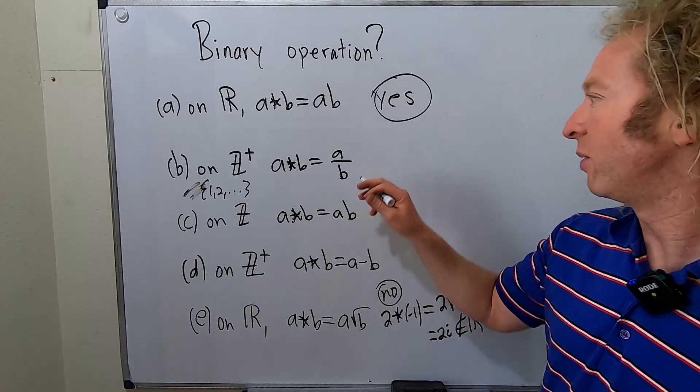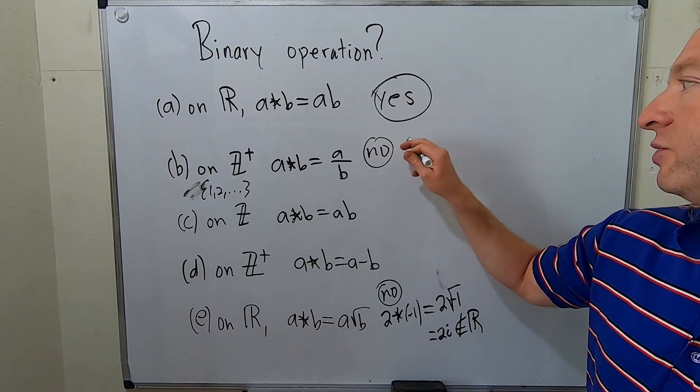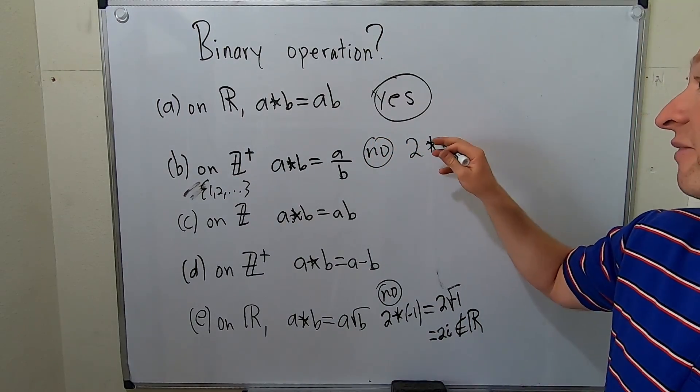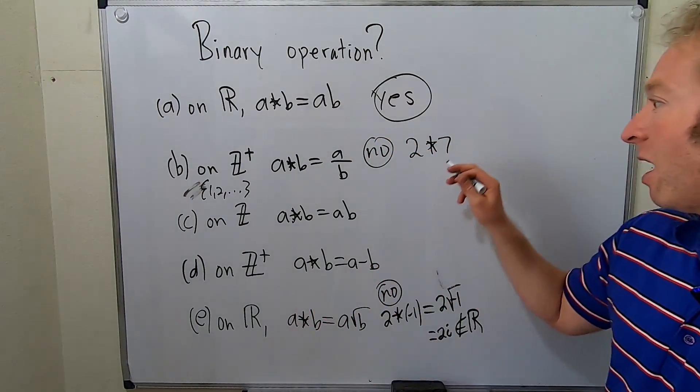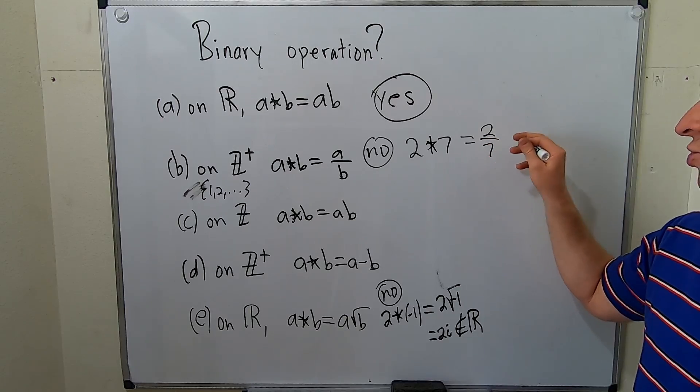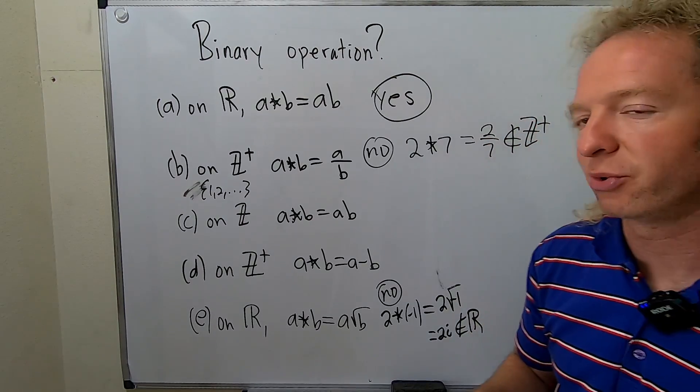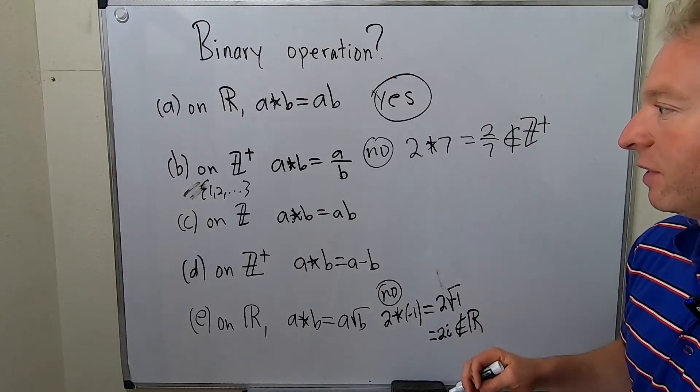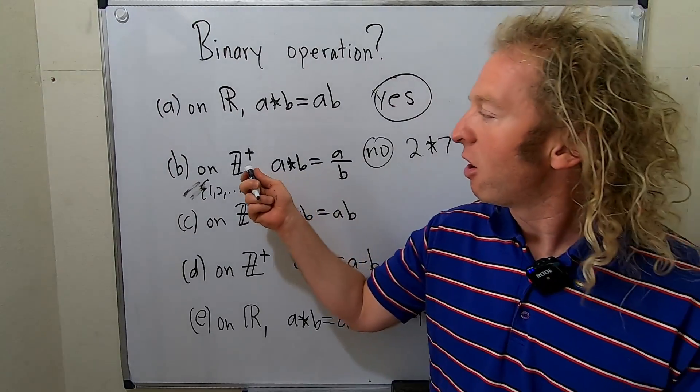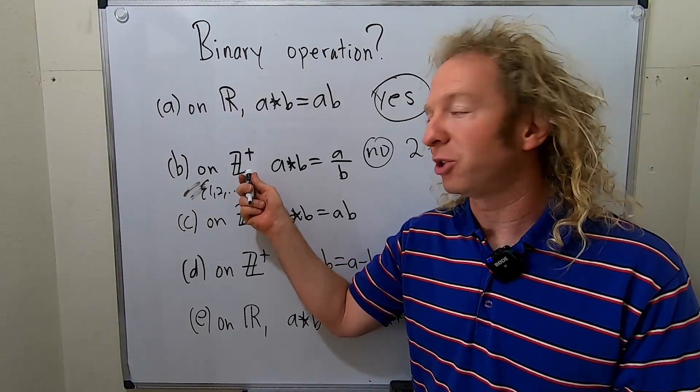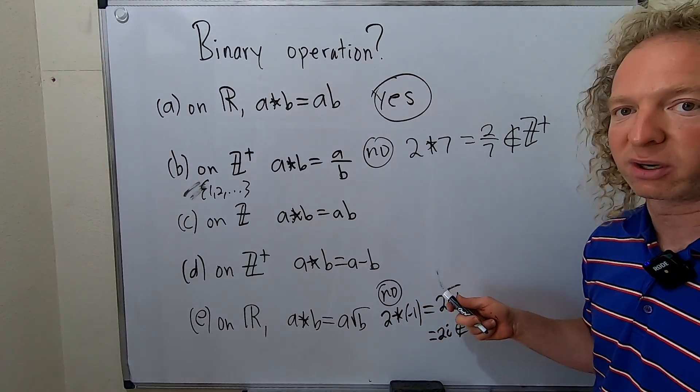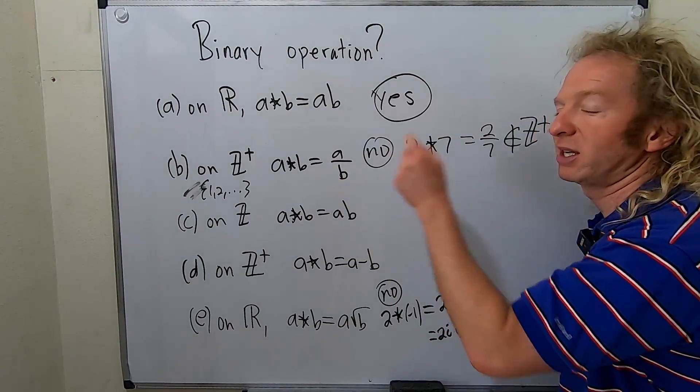Again, the answer is no. We can take, say, two star seven. I mean, there's so many options here. And that's two over seven. That is certainly not an element in the set of positive integers. So that does not work. If we had said maybe all non-zero rational numbers, then it would work. I say non-zero because we can't divide by zero.